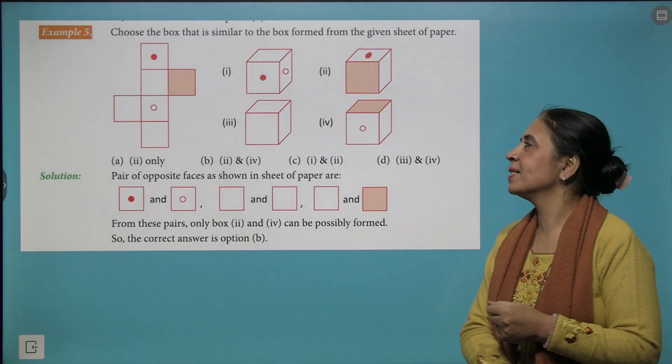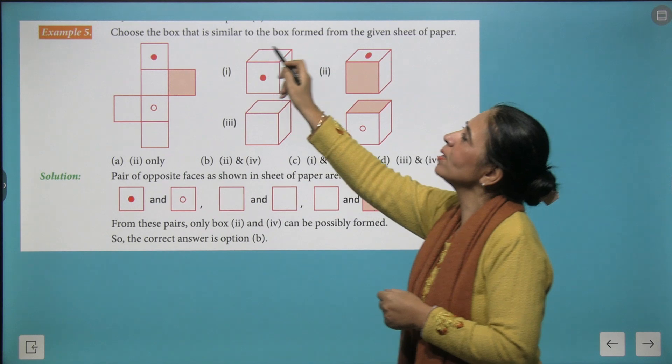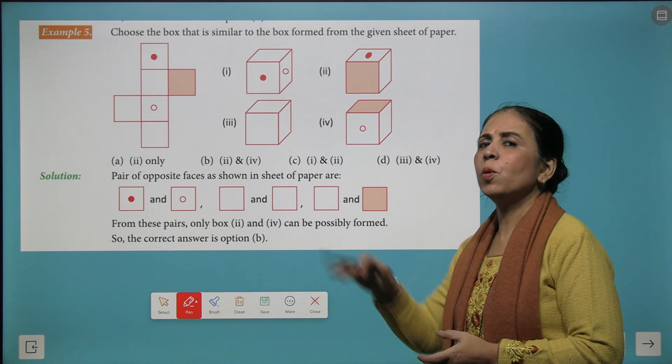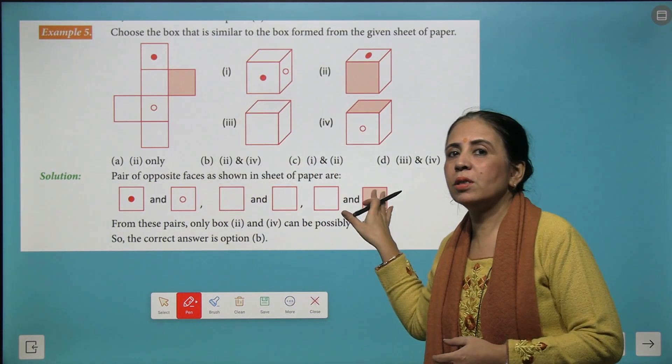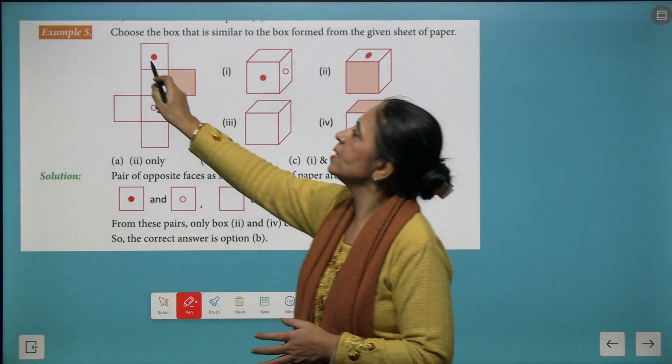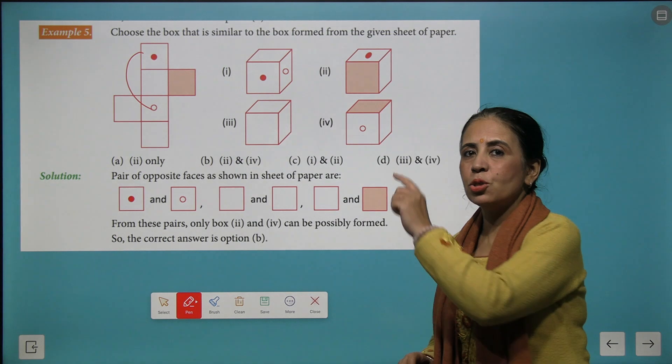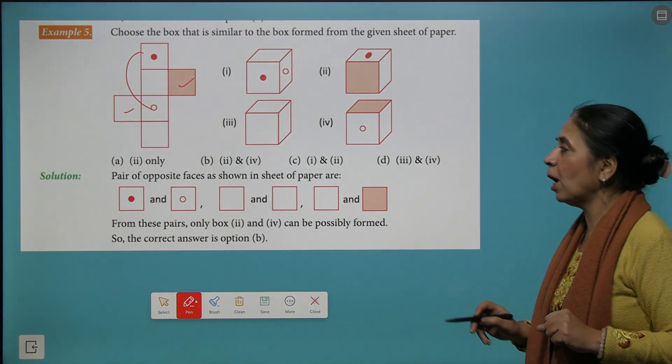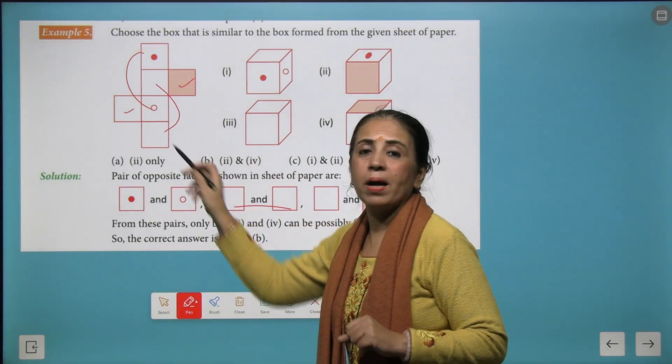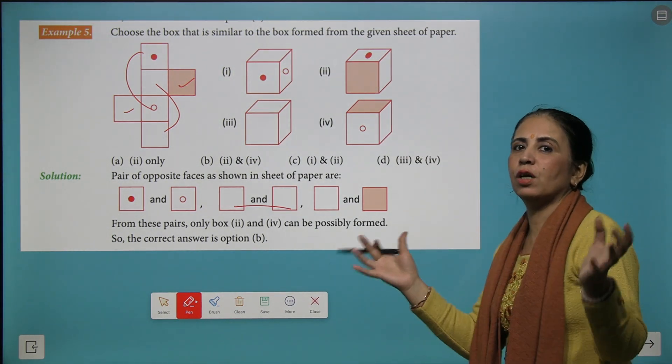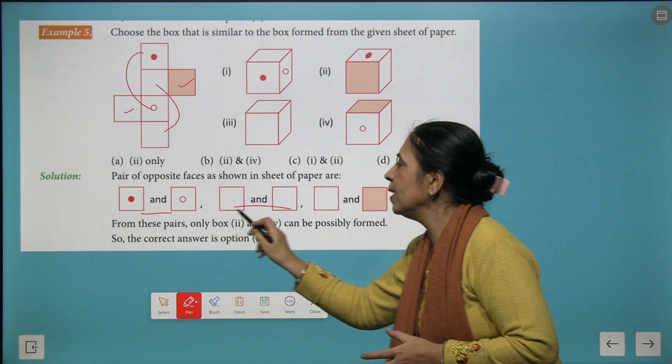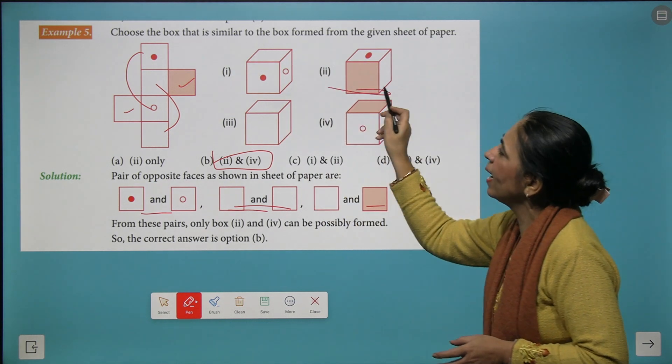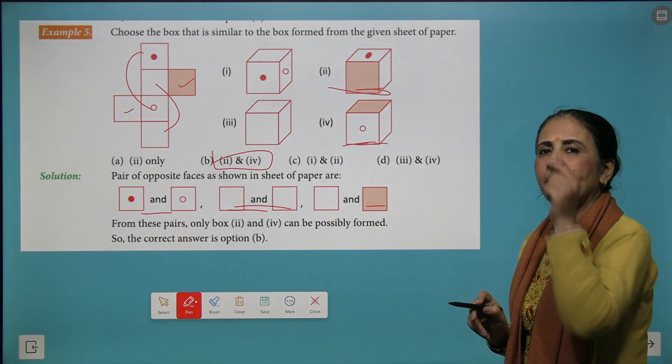Now let's look at some more interesting examples. You have to choose the box that is similar to the box which is formed from the given sheet of paper. Now did you remember we started that how the net gets converted into the cube. And we say this dot and this circle should be the opposite sides. Similarly, this shaded and blank part should again be the opposite sides. And these two blank parts should be the opposite pair of the cube so formed. So looking at these three combinations, we come to the conclusion that only second and fourth can be the right option to form the cube so formed with the help of this net.